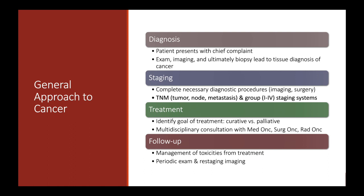Once we know the diagnosis, it's really important to correctly stage the patient. Cancer staging is really a way of communicating how advanced the cancer is and what our prognosis for the patient is — how well do we think the treatment can work. A common staging system is the TNM staging system, which stands for tumor, node, and metastasis. Most cancers are staged using this system. We ask: how big is the tumor, has it invaded into nearby organs, are there regional lymph nodes involved and to what extent, and has the cancer metastasized or spread to other organs outside of the primary organ?